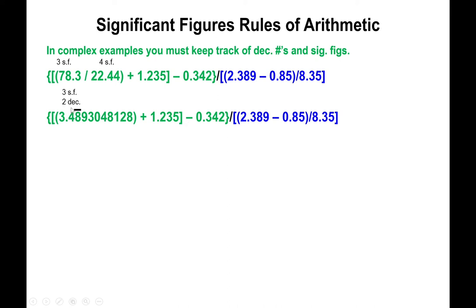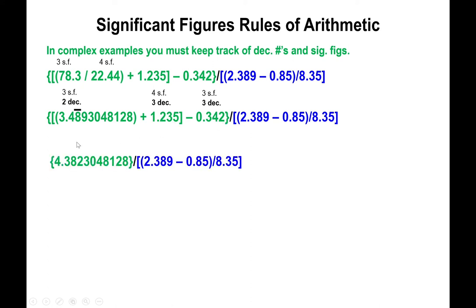Since the next operation is addition/subtraction, switch to tracking decimal places: this number has two decimal places, the next number has three, and the last also has three. So the result of this addition and subtraction must have two decimal places. Input the full unrounded number, add 1.235, and subtract 0.342. Your calculator gives 4.3823048128. You stop at the second decimal place — the eight — since that's the least number of decimal places.